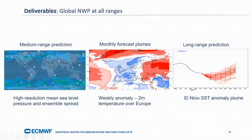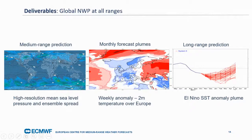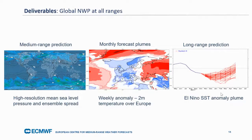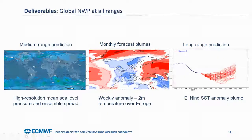Looking at the longer range — monthly predictions — it's very difficult to make specific predictions for a single location at a specific time. What's done there is more thinking about global indices, for example how El Niño is going to behave in the next couple of months, whether it's going to be stronger or weaker, which then indicates warmer or colder conditions in certain areas of the globe. The uncertainty increases as you go further into the future, as indicated by the ensemble spread in the slide.